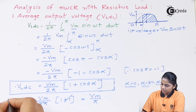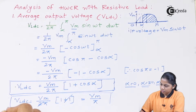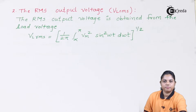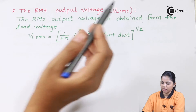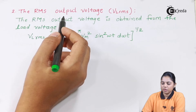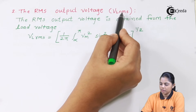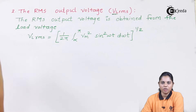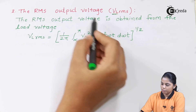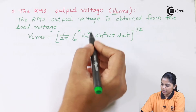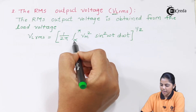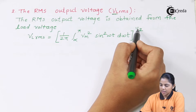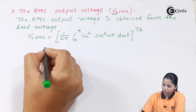Now, if you understood this is the maximum output voltage that can be achieved, then we'll go for the next, that is the RMS output voltage. For the RMS output voltage, it is a root mean square, so the root mean square of the voltage VL is obtained from: VL_RMS equals [1 by 2pi, integral alpha to pi, Vm squared sin squared(ωt) d(ωt)] raised to 1 by 2.